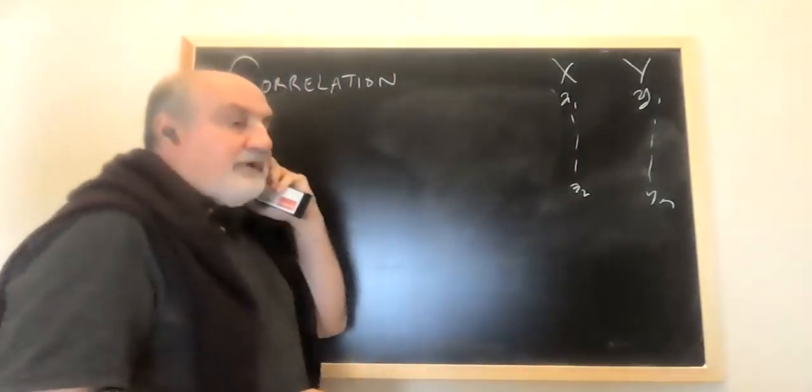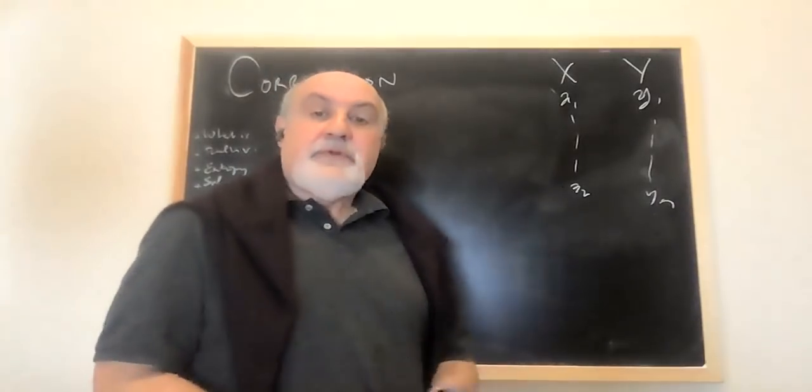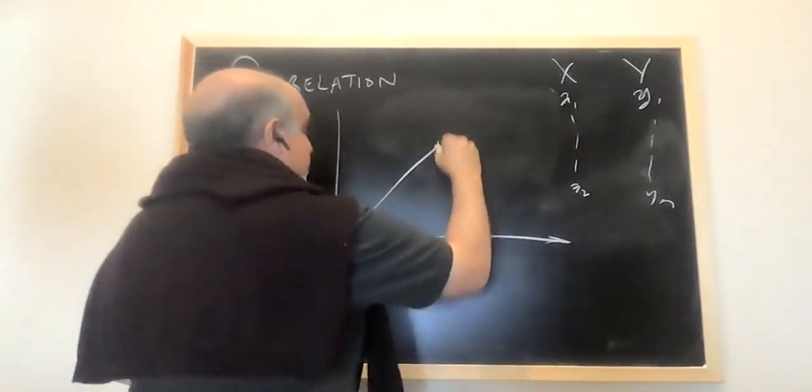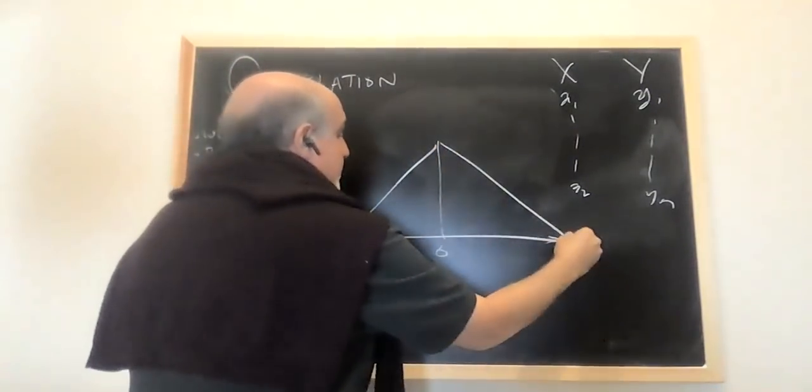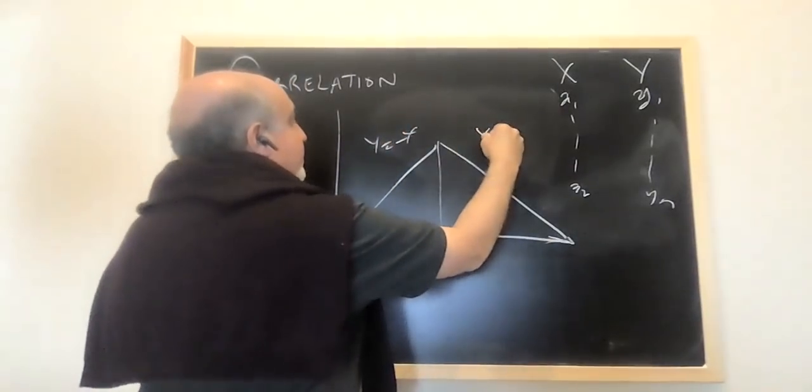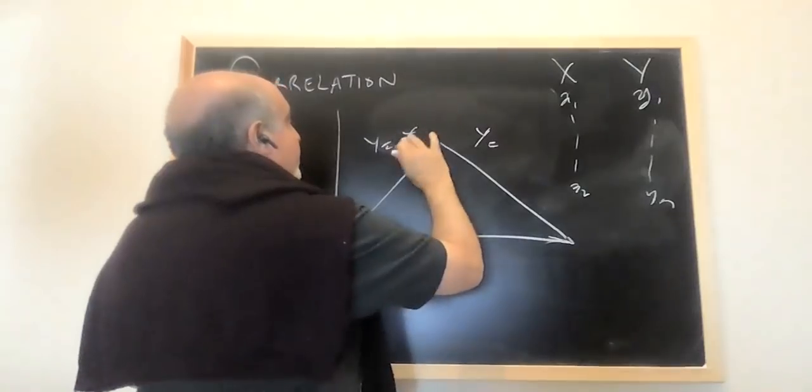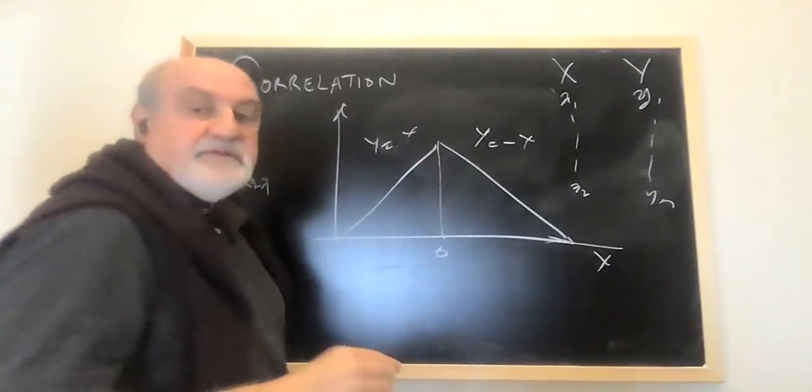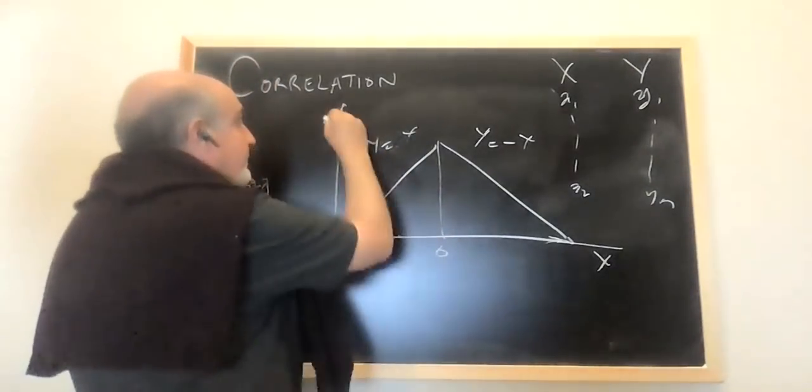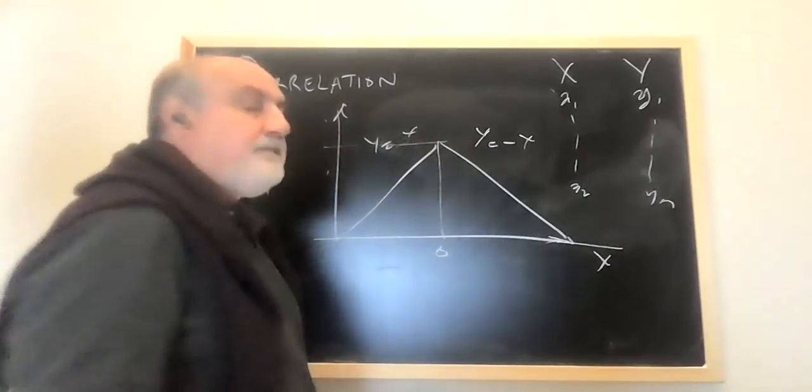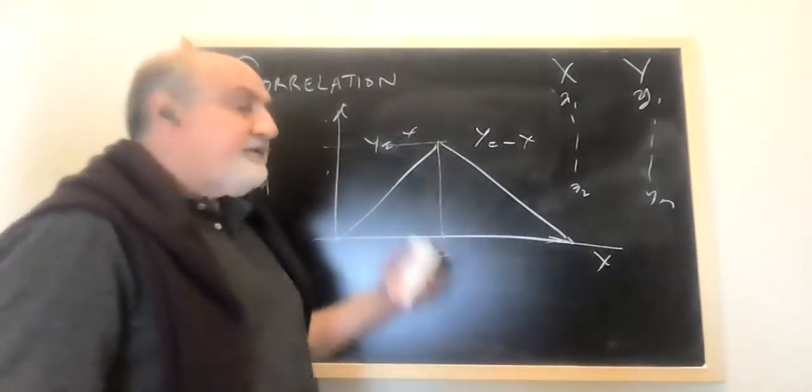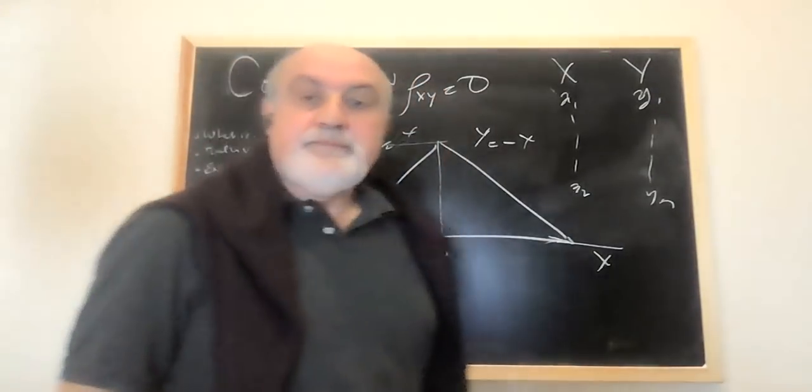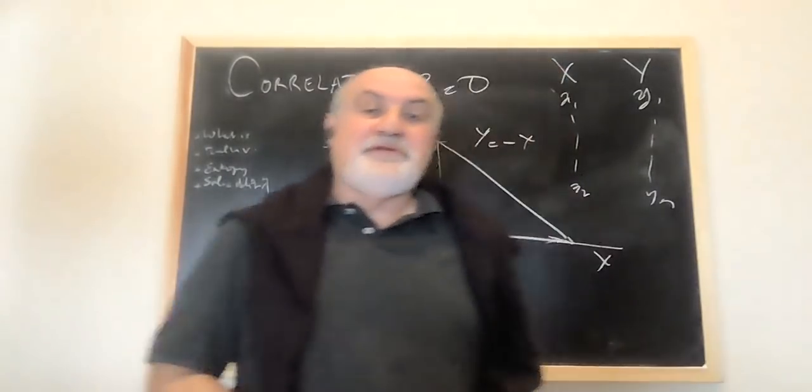Now, you would think that correlation reflects dependence. I'm going to show you a situation where below zero, y equals minus x, and above zero, y equals x. This is x. With no noise, 100%, you know x, you will know y. Guess what? What is the correlation? Rho x, y equals zero.